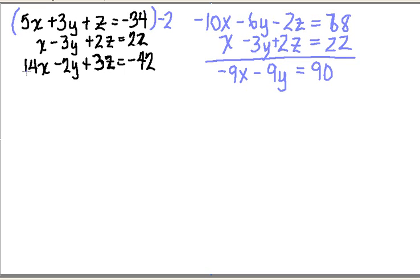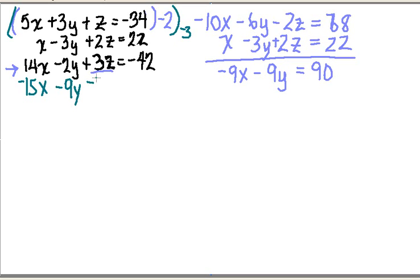Now I'm going to pick the next equation, which has to be the one I have not previously used — this third one. Again I want to eliminate the same variable as before, so once again I'm going to eliminate the z term. Here I have a positive 3z. So in order to eliminate it, I'm going to use this first equation again and multiply by a negative 3. So I'm rewriting it: I get a minus 15x, a minus 9y, a minus 3z, and that is going to be equal to a positive 102.